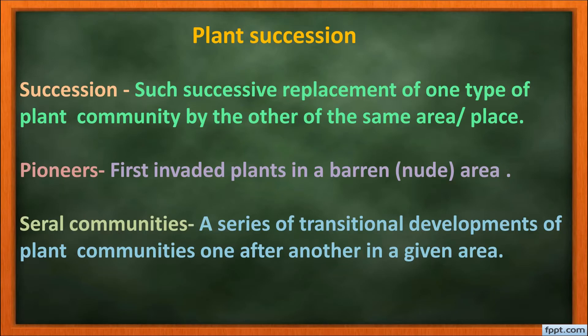Pioneers are the first plants to invade a barren or nude area. When a nude area is occupied by a group of plants for the first time, they are called pioneers. These pioneers will be replaced by a series of different types of plant communities season by season — these are called seral communities: a series of transitional developments of plant communities, one after another in a given area.